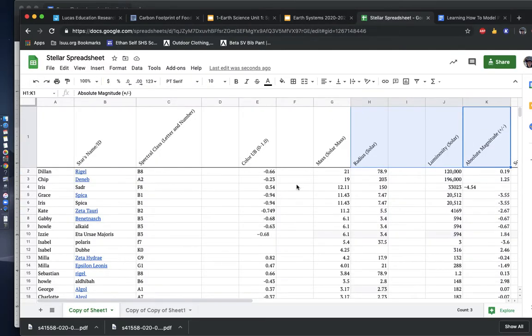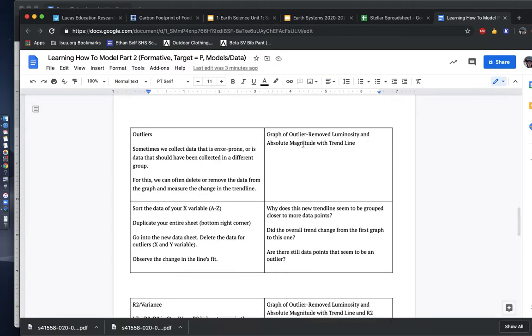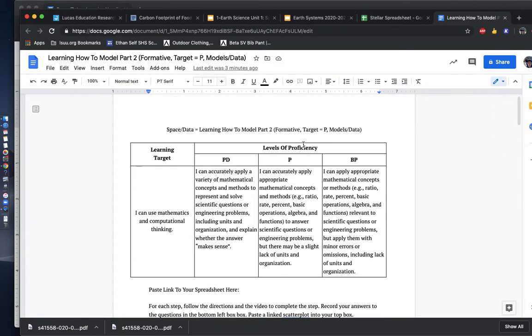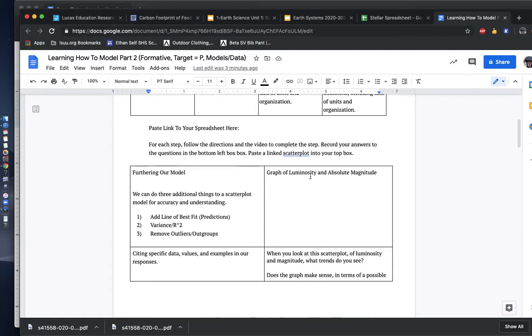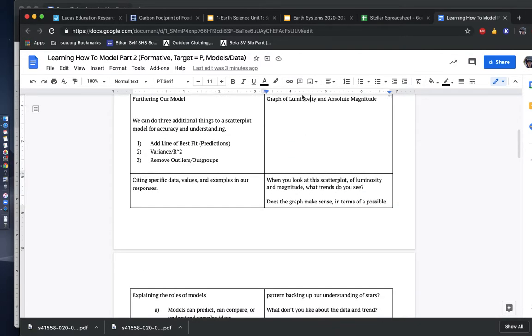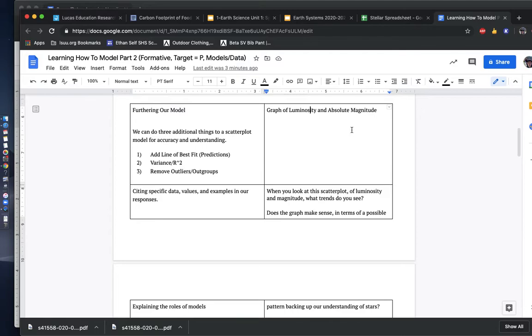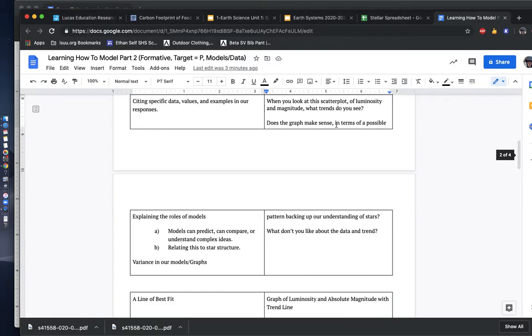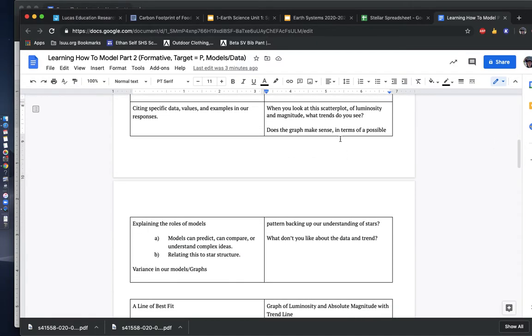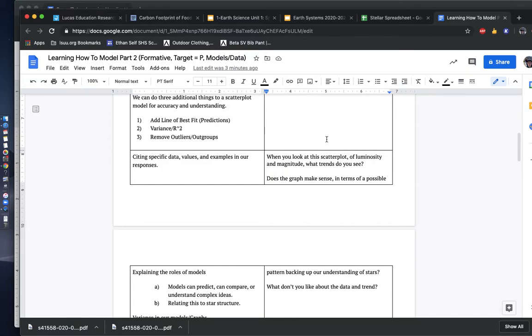You're going to want to have a copy of the Stellar spreadsheet and you're also going to want to have Learning How to Model Part Two, which is going to be having you make graphs, put them in the top right corner, and then answer some questions in the bottom right corner related to the graph or the overall thing that we're talking about.